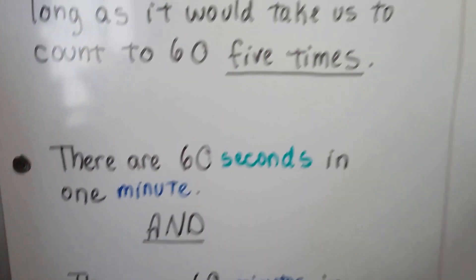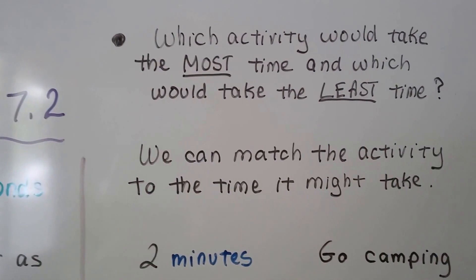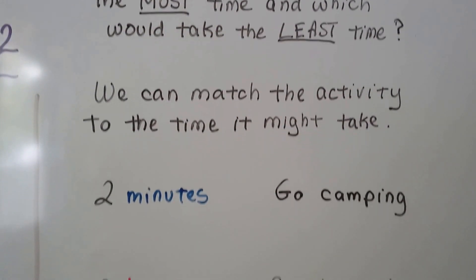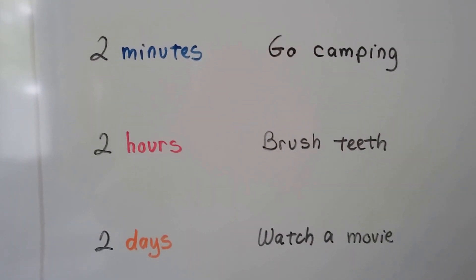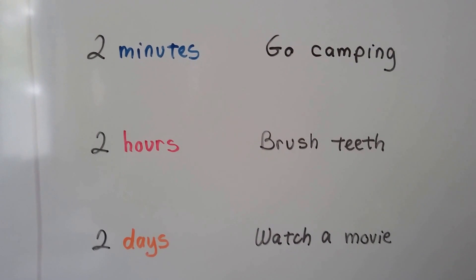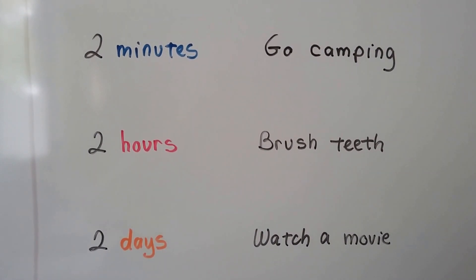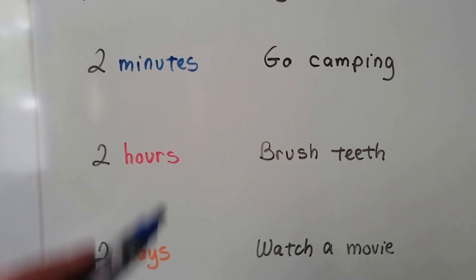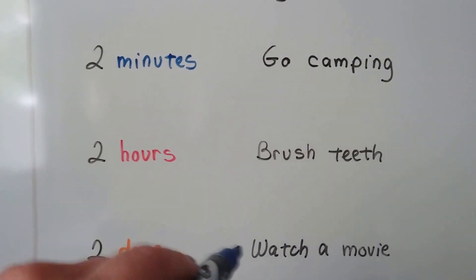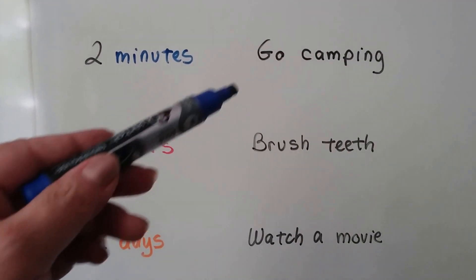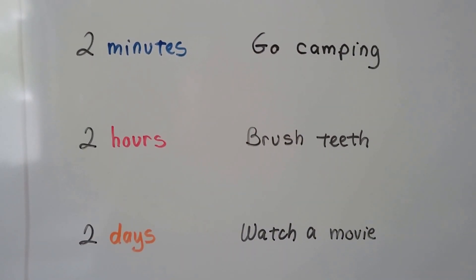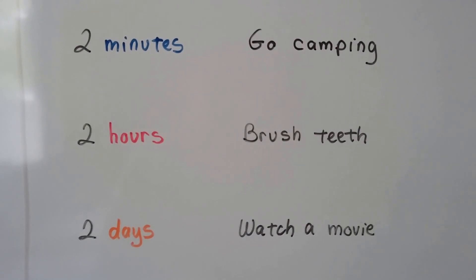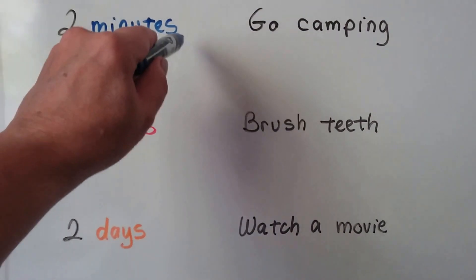Which activity would take the most time and which would take the least time? We can match the activity to the time it might take. We have two minutes, two hours, or two days, and the activities are: go camping, brush teeth, and watch a movie. Which one would take two minutes? Would it take two minutes to go camping? No, that wouldn't even be time enough to set up the tent. Would it take about two minutes to brush teeth? Yes, it would — so we can draw a line to connect those.